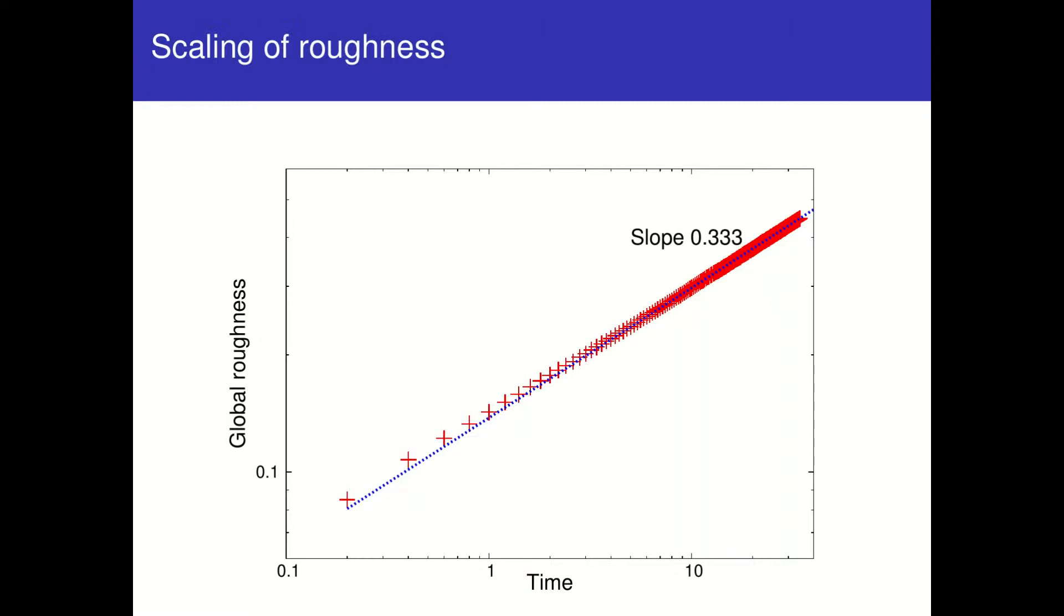A growth exponent of one-third is not novel in kinetic roughening. Indeed, it is one of the hallmarks of the so-called Kardar-Parisi-Zhang universality class for far-from-equilibrium growth.